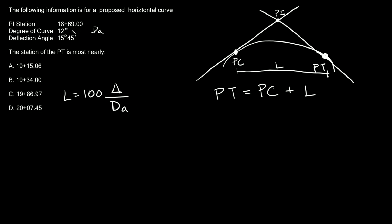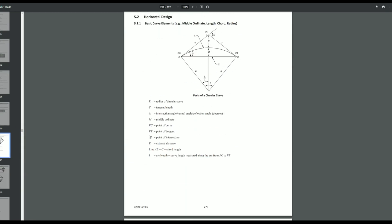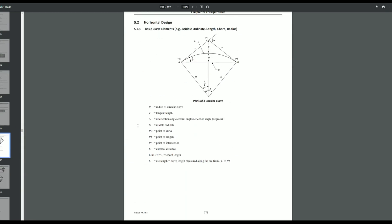So that means 12 degrees is dA. So that means delta must be the deflection angle. And you can go back to the handbook to just confirm that. So if we come up here, we can see that delta is indeed the deflection angle.